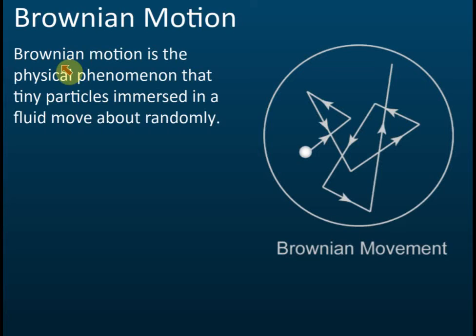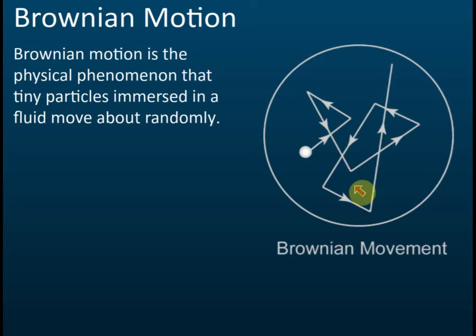Robert Brown was actually a botanist. He put some pollens of a flower into water and observed them under a microscope. He found that the pollens move in random motions — going here, up, down, and back again.